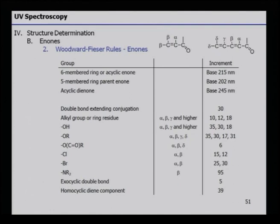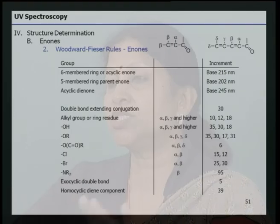If an OH group is on the alpha, beta, or gamma carbon, then the additional increments are 35, 30, and 18 respectively. If an alkoxy group is present on alpha, beta, gamma, or delta carbon, then 35, 30, 17, and 31 respectively are added as incremental values. The Woodward-Fieser rule holds good for enones as well — the incremental values when added to the base value give more or less the same result as the experimental value.